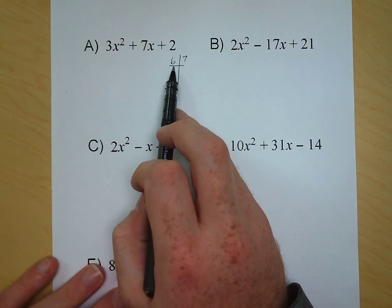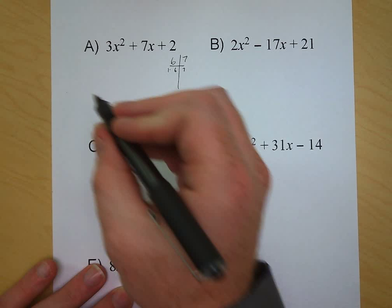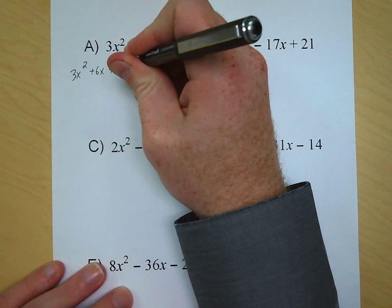The first step for grouping is we rewrite our first term, 3x squared. Now is where we come in with our two factors: we're going to add 6x and 1x, and then we have our 2. We can see that when we simplify, 6x plus 1x would equal 7x — that's our goal here.